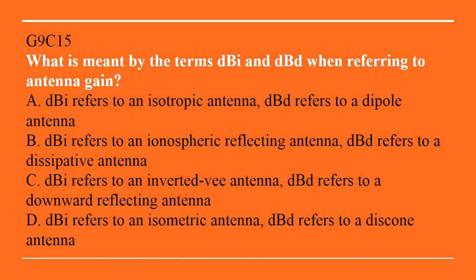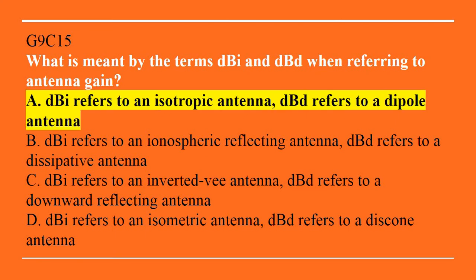G9C15: What is meant by the terms dBi and dBd when referring to antenna gain? A. dBi refers to an isotropic antenna, dBd refers to a dipole antenna. B. dBi refers to an isospheric reflecting antenna, dBd refers to a dissipative antenna. C. dBi refers to an inverted V antenna, dBd refers to a downward reflecting antenna. Or D. dBi refers to an isometric antenna, dBd refers to a discone antenna. The correct answer is A — dBi refers to an isotropic antenna, dBd refers to a dipole antenna.